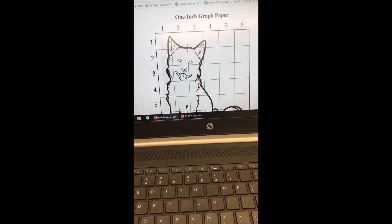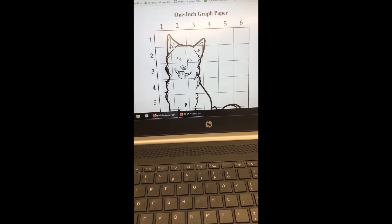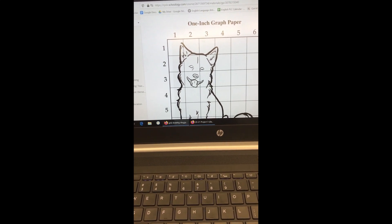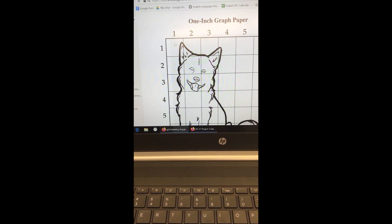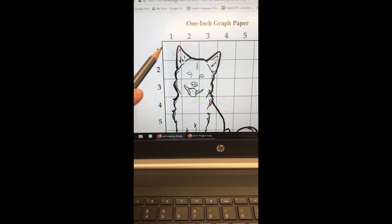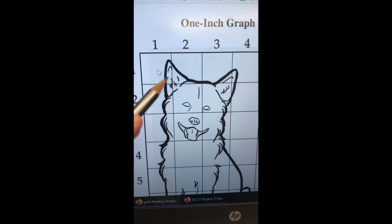Sometimes when drawing, people can get overwhelmed. So that's why grid drawing is a nice little technique to do because you only focus on one box at a time. So like in box 1-1, over here, this is box 1-1. So what is inside of box 1-1?